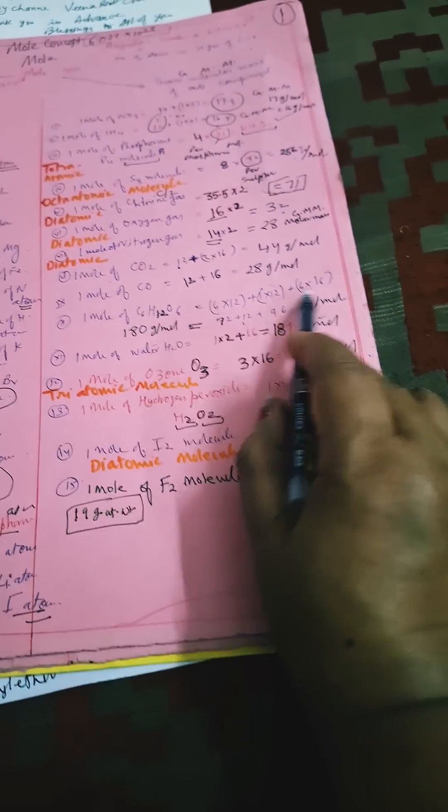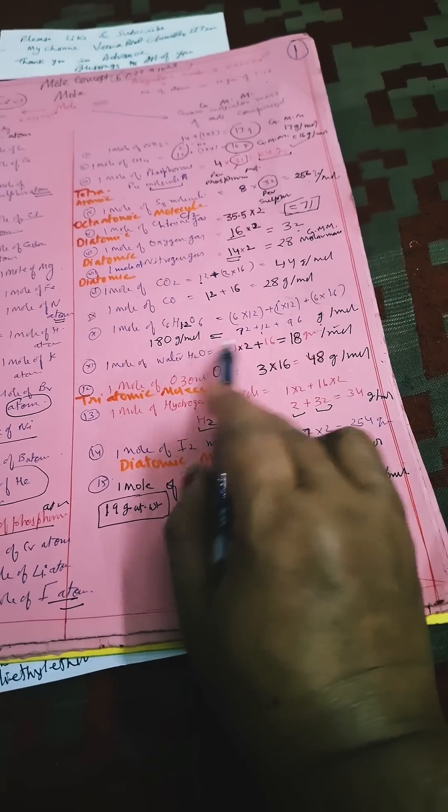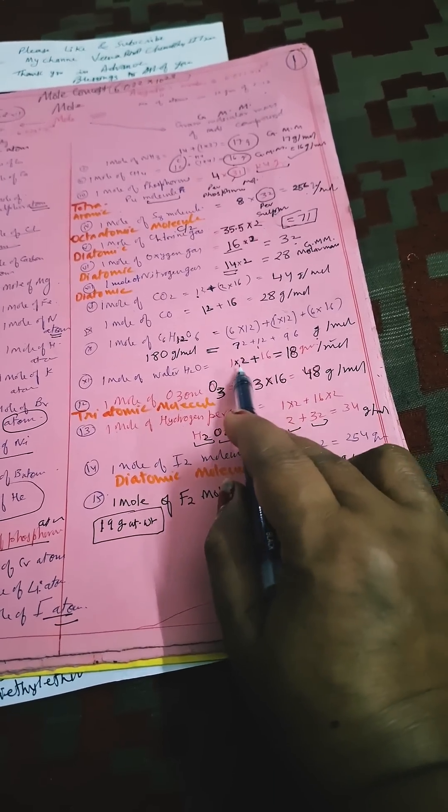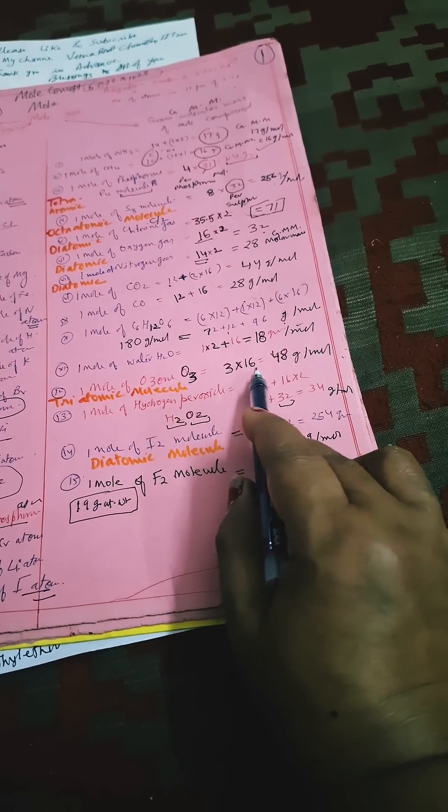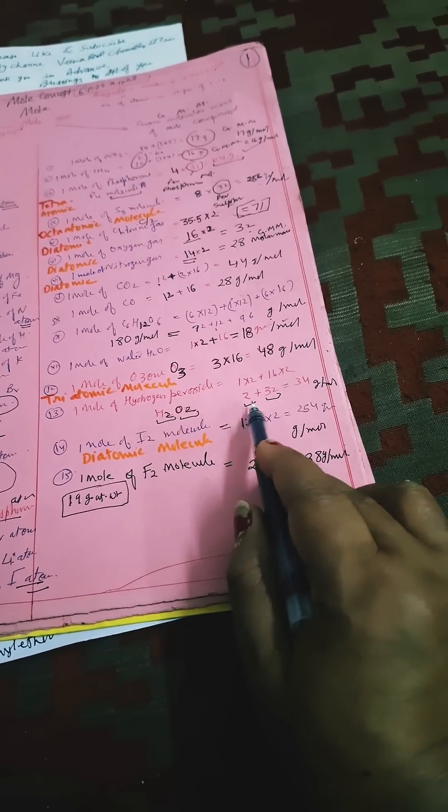Water: 1 × 2 plus 16 is 18 grams. Oxygen triatomic O3: 3 × 16 is 48 grams. H2O2: 2 plus 32 equals 34 grams.